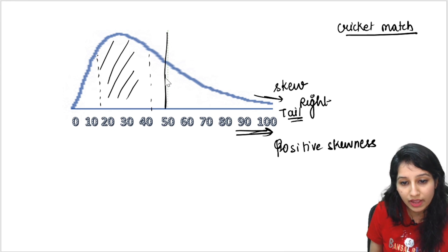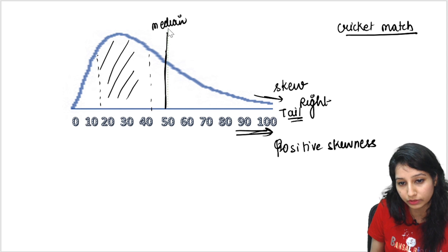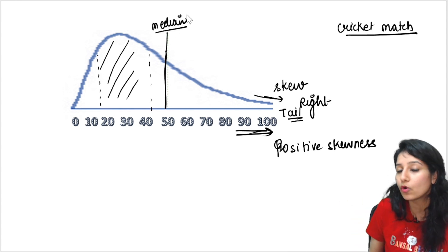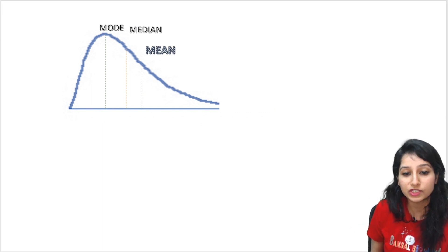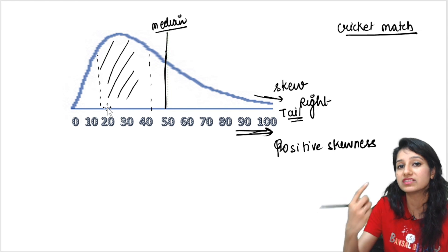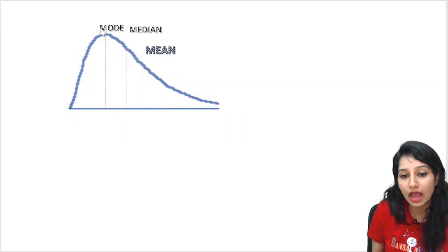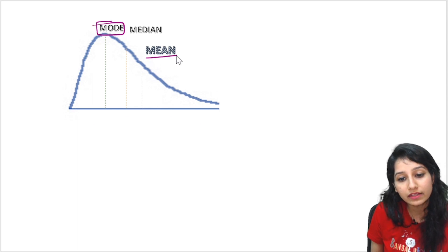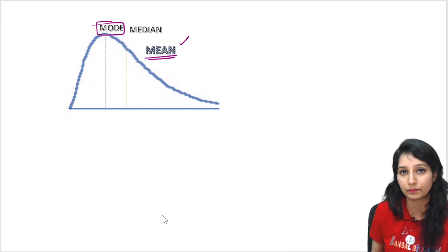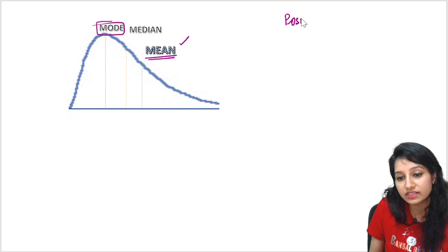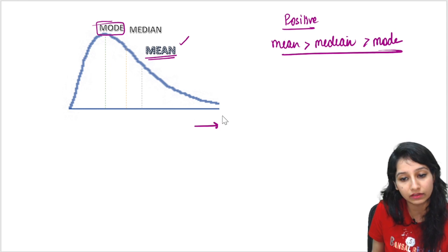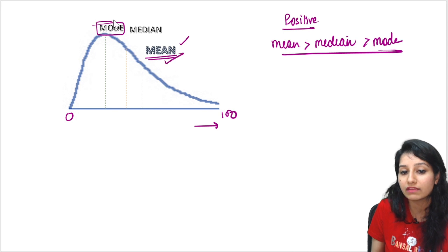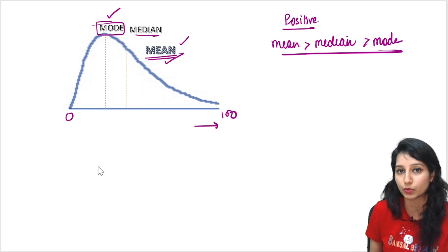Now here we see that the median is the center value. But mode and mean are not at the same place. The mode is where the most cricketers scored — for example, 30. So the mode will be 30. And the mean is the average of all values. So in positive skewness, the mean is the highest, then there is median, and then there is mode. The mean is more, the mode is less.